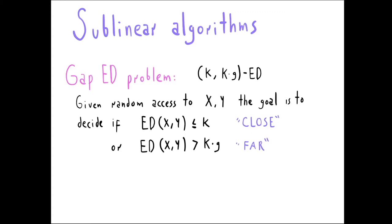More formally, we study the gap edit distance problem, denoted k vs. k·g edit distance, in which we are given random access to strings x and y. The goal is to distinguish whether the edit distance is at most k (the strings are 'close') or larger than k·g (the strings are 'far'), where g is the gap. If the edit distance falls somewhere in between, the algorithm can output anything. Our aim is to minimize the number of accesses to x and y — in particular, to get sub-linear in n accesses.